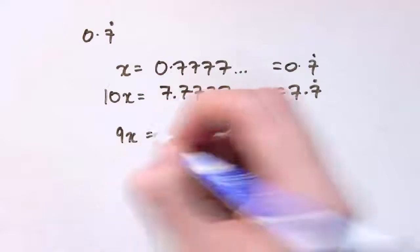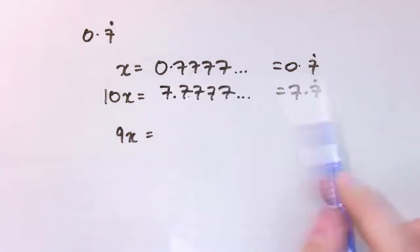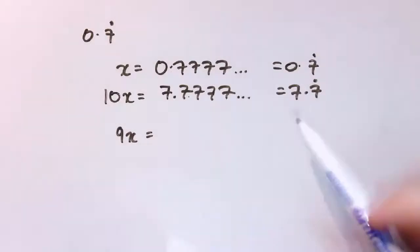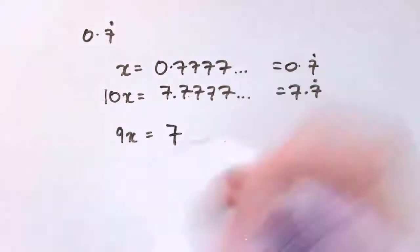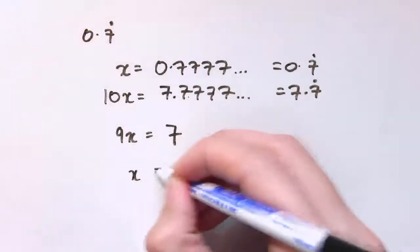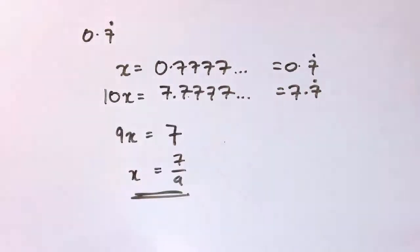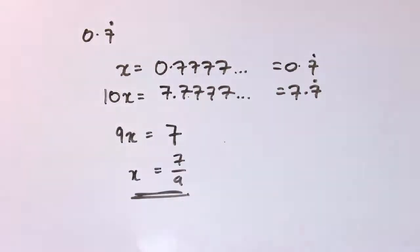When I subtract 10x from x, I'm left with 9x. 9x equals this number minus this number, but if I subtract this number from this, all of the 0.7 recurring bit goes away and I'm just left with 7. So x must be the solution to 9x equals 7, so x equals 7 ninths.